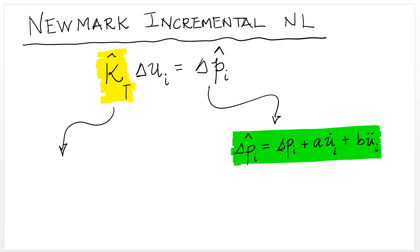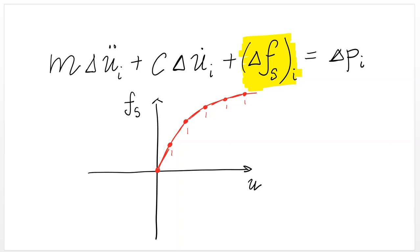On the other hand, K hat in the nonlinear case, K tangent is simply going to be equal to the stiffness of the structure at that time step, which is now not constant for every time step, because as we mentioned, the tangent of this curve is changing with displacement.